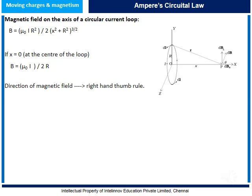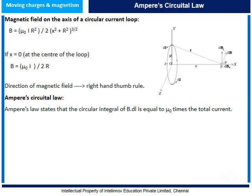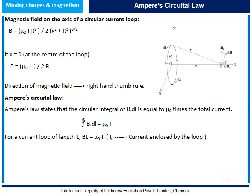Let us understand Ampere's circuit law. Ampere's circuit law states that the line integral of B·dl is equal to μ₀ times the total current enclosed. For a current loop of length L, BL = μ₀I_enc, where I_enc is the current enclosed by the loop. Also, the magnetic field in a solenoid and toroid are the same and equal to μ₀nI, where n is the number of turns per unit length in the solenoid or toroid.